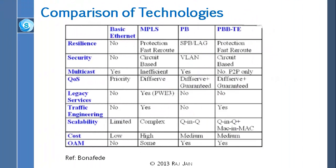If you compare these technologies: basic Ethernet has no resilience — if something goes, you cannot survive. With MPLS you can survive. With provider bridge, if you use link aggregation or shortest path bridging, you can survive. With PBB-TE you have protection and faster reroute. For security: basic Ethernet has no security; provider bridge has VLAN-based security so somebody else's traffic cannot get into your VLAN; PBB-TE has circuit-based security — nobody else's circuit can get into your circuit.